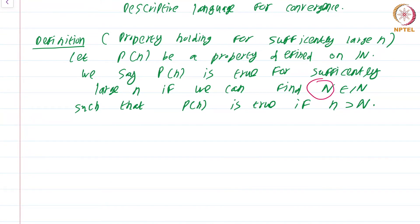Notice this: the property holding for sufficiently large n does not specify how large we need to go. It could be the case that we may have to go n greater than 10 million, or 10 trillion, or 10 trillion million — it could be very, very large. That does not matter.